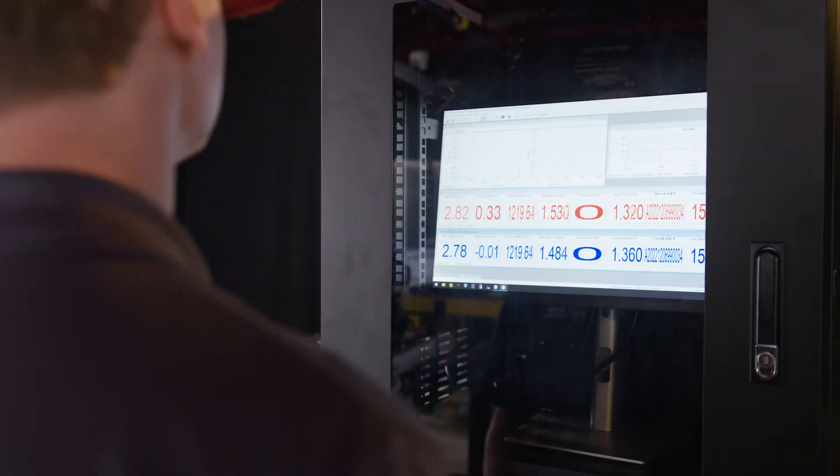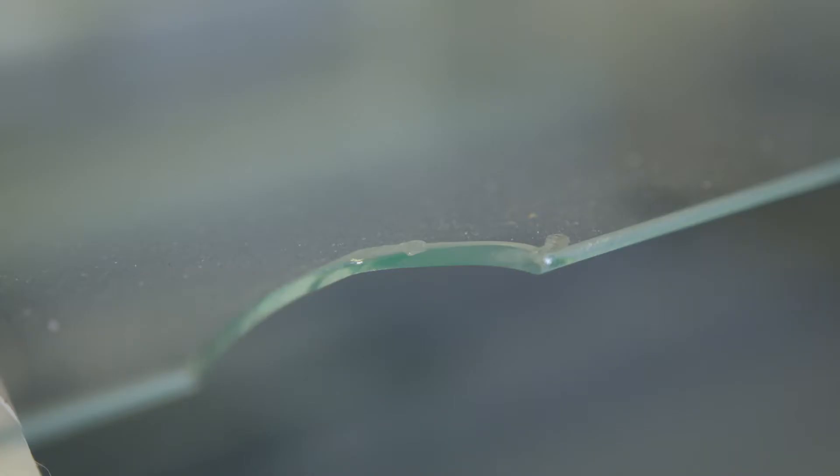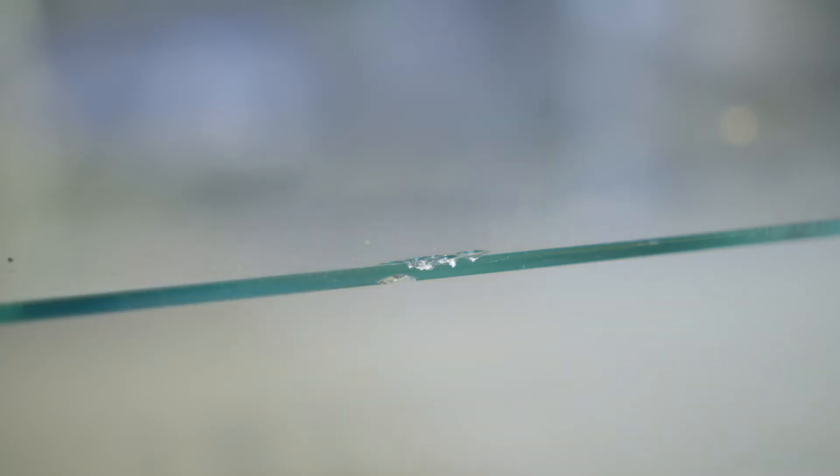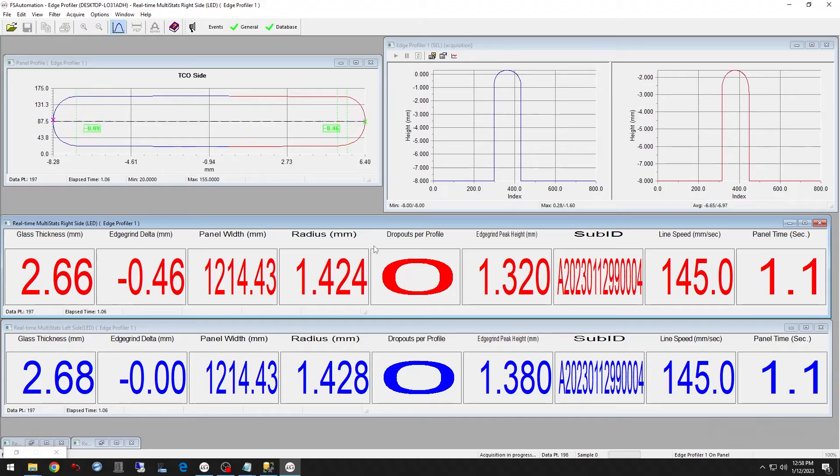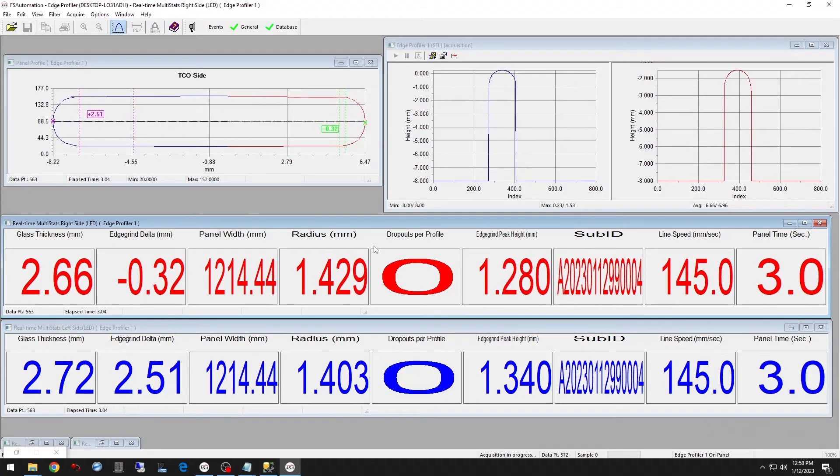This system is configured to detect small chips, cracks, and other debris or abnormalities along the edge of a panel, as well as measure sub-millimeter changes in panel width, panel thickness, and the radial profile.